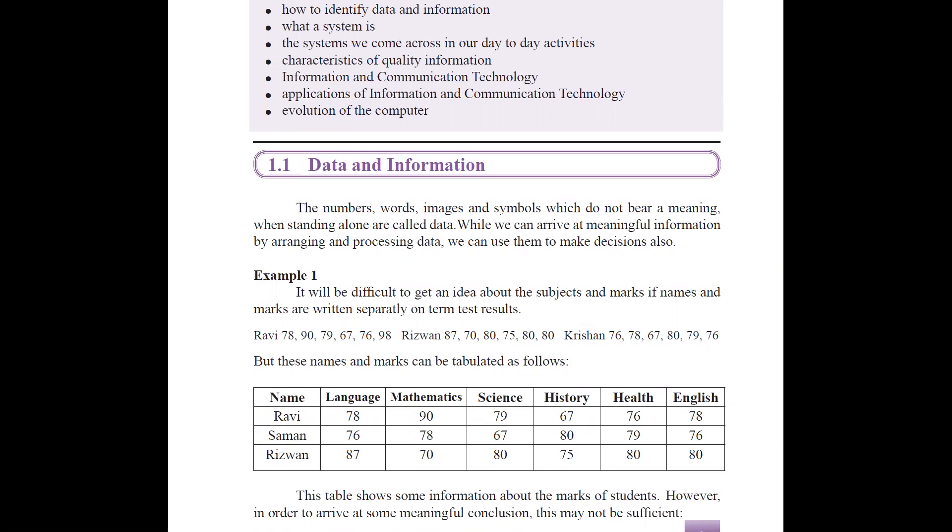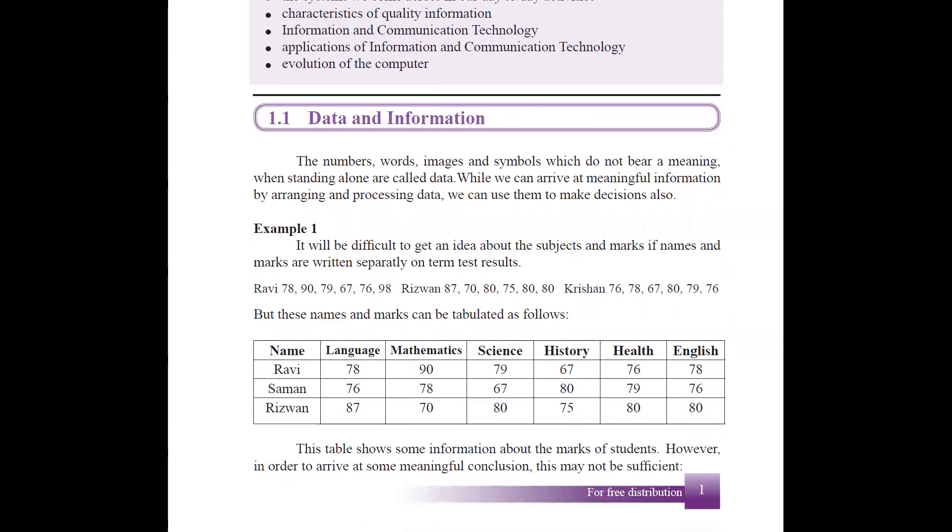But if we process or arrange these data into meaningful information, then we can use them for the decision making. So information is the processed data, which we can use for decision making. And when we compare data and information, information has more value because they are already processed.